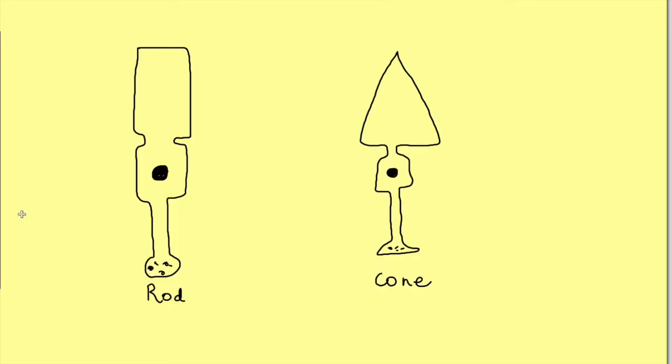Rods and cones structurally have three functional segments. An outer segment which is responsible for phototransduction, then an inner segment which houses the nucleus and hence the biosynthetic machinery, and finally there is the synaptic terminal which makes contact with other cells of the retina and releases neurotransmitters.